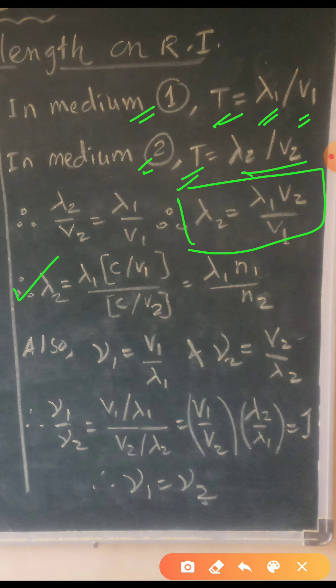Lambda 2 is equal to lambda 1 times N1 upon N2. This means lambda 2 is less than lambda 1. Regarding frequency: in medium 1, nu 1 is equal to V1 upon lambda 1; in medium 2, nu 2 is equal to V2 upon lambda 2. Taking their ratio, we get V1 upon V2 multiplied by lambda 2 upon lambda 1, and their product equals 1.